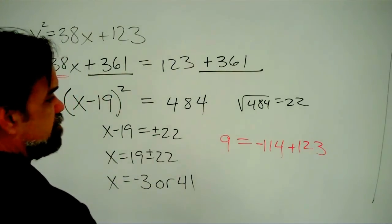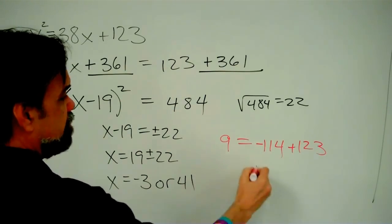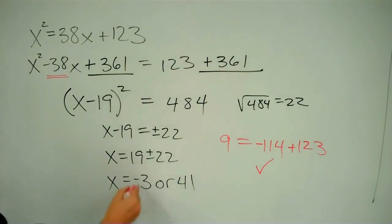is that a true statement? Yeah, 123 minus 114 does equal 9. So yes, that checks out. If one of your solutions works, the probability of your other solution working is very high. So I'm feeling really good about this answer now.